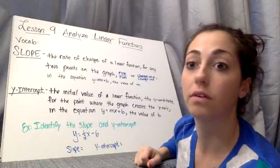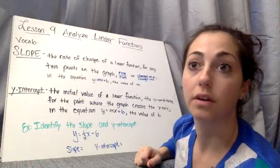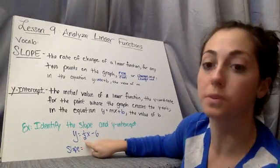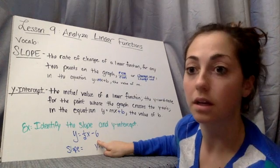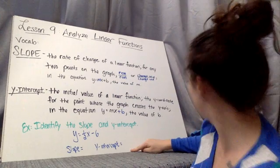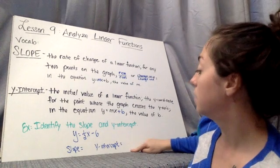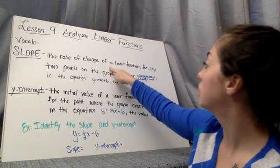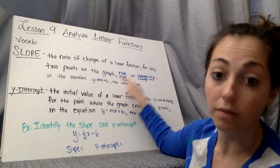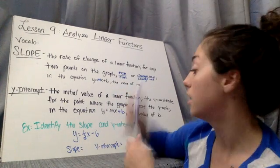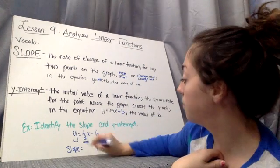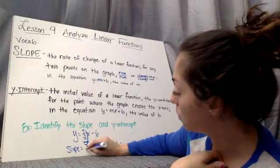So I have an example here. It says identify the slope and the y-intercept with the equation y equals one-half x minus six. So which one is my slope? We're looking at the equation, y equals mx plus b, the value of m. So which is the value of m? Well, it's the one next to the x. So that's that one-half. So our slope is one-half.